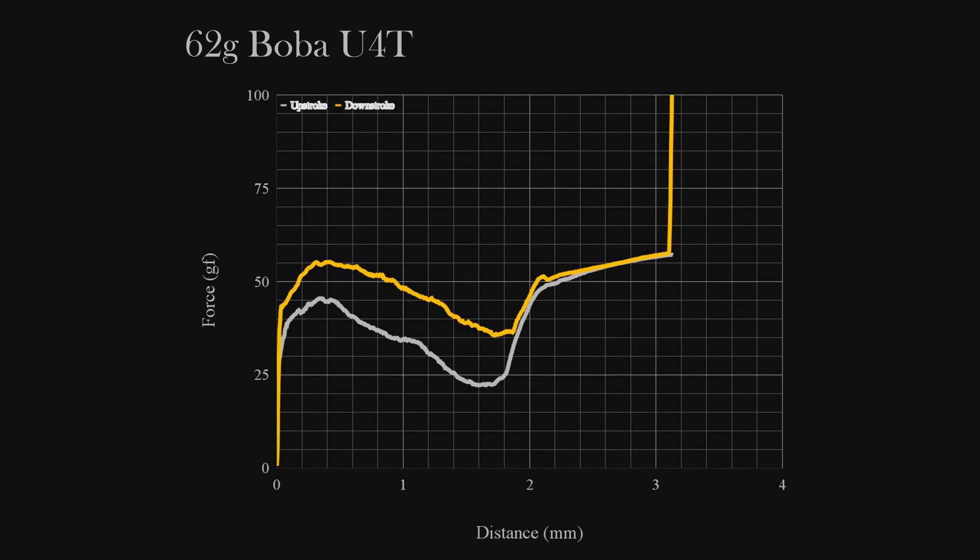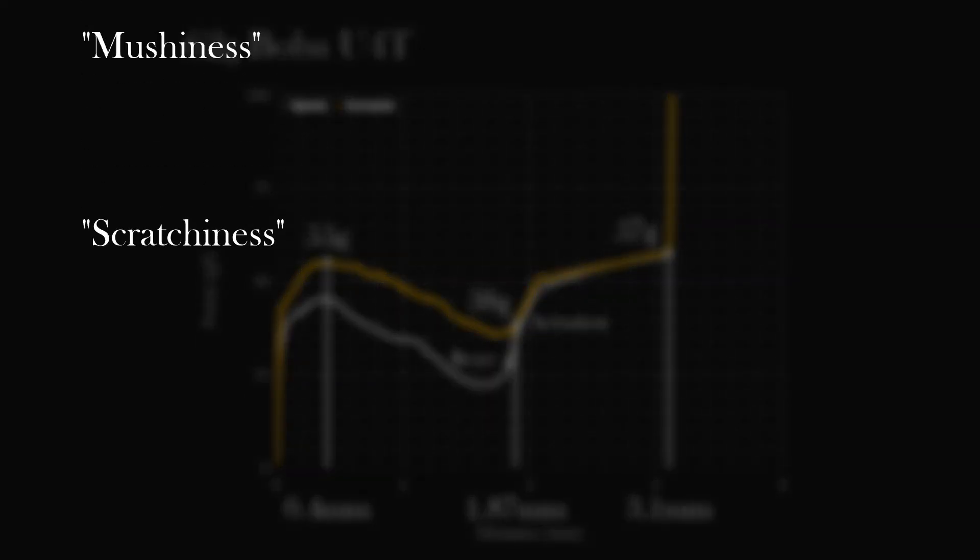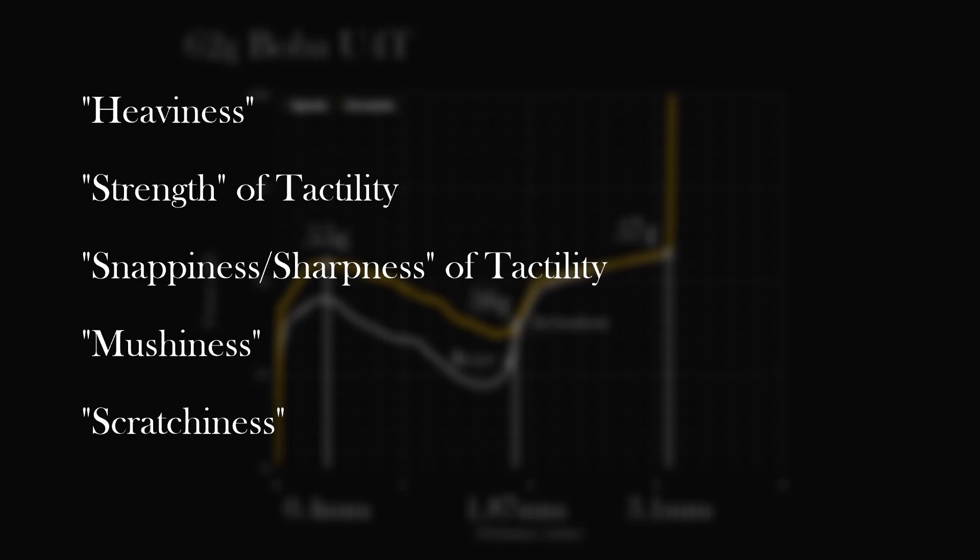Take a look at this force curve of 62 gram Boba U4Ts. Just looking at it, there are many objective qualities that can be read from the switch such as tactile peak force, tactile event location, bottoming out force, and bottoming out distance. Sometimes they label the actuation point so we're able to get the actuation distance and actuation force as well. But there are many other descriptors of a switch that can be found using force curves.